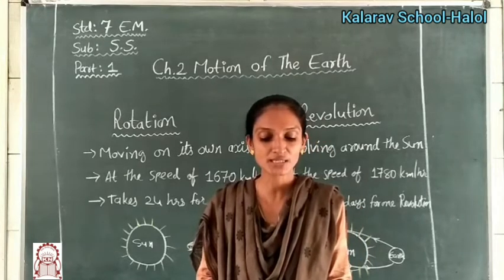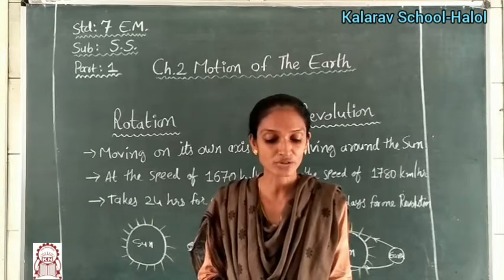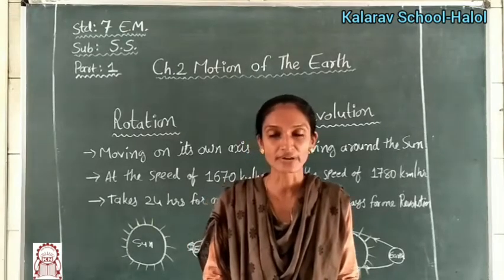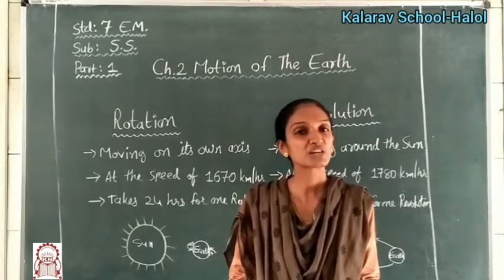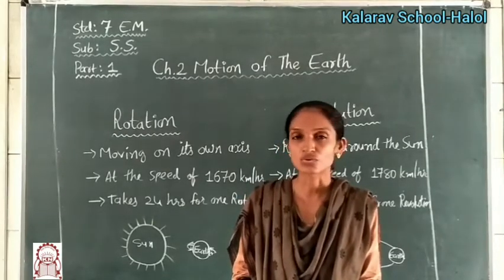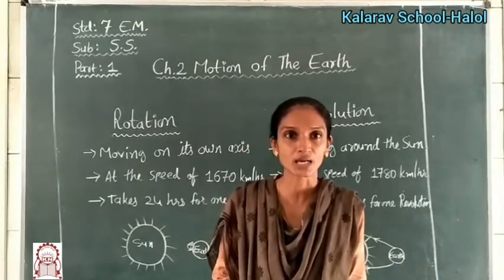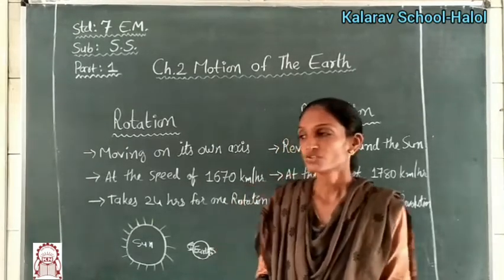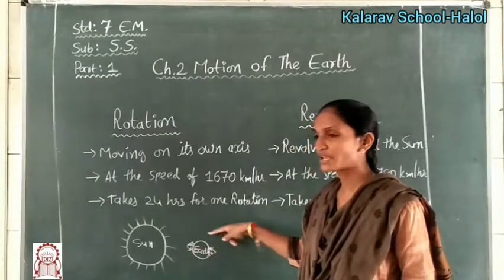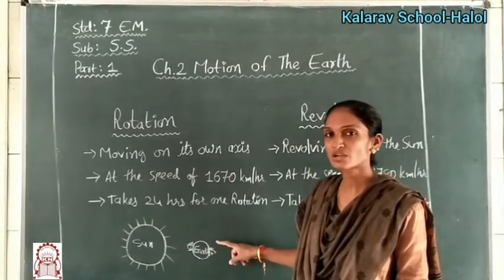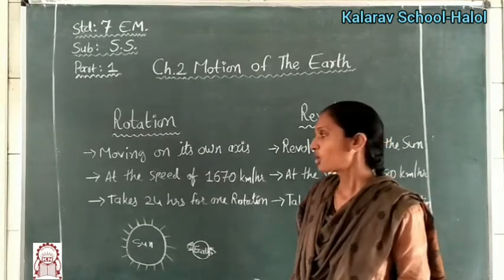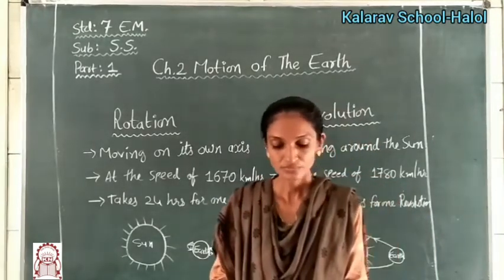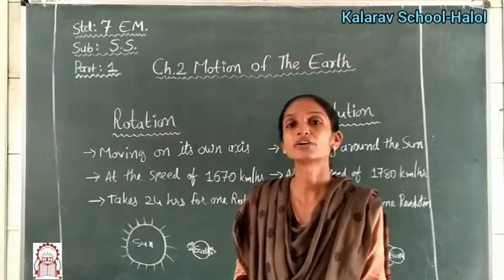The earth rotates on its imaginary axis. The speed of rotation at any point along the equator is approximately 1670 km per hour. The earth takes 24 hours to complete one rotation, and its speed is approximately 1670 km per hour.